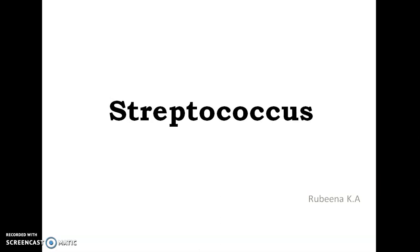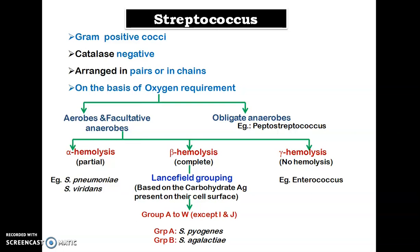Today we will be learning about Streptococcus. Streptococcus are gram positive cocci and they are catalase negative. In case of Staphylococcus, which we studied earlier, it was catalase positive. The gram positive cocci as a whole are divided into two groups based on the catalase test: catalase positive family is Micrococcaceae, and catalase negative is Streptococcus. Staphylococcus comes under Micrococcaceae family and Streptococcus comes under the Streptococcus family.